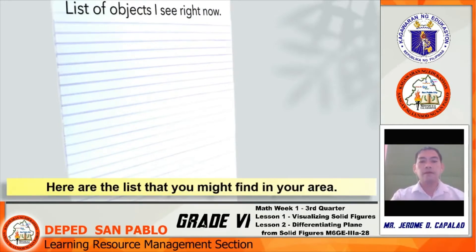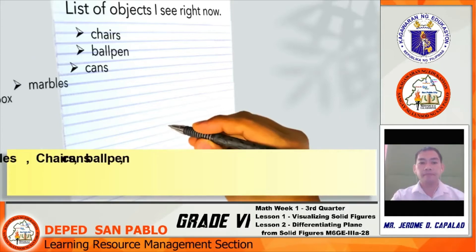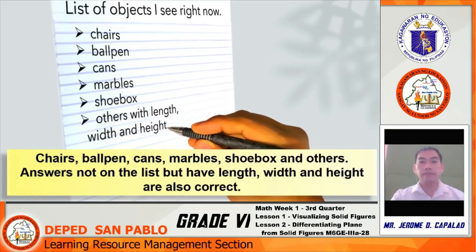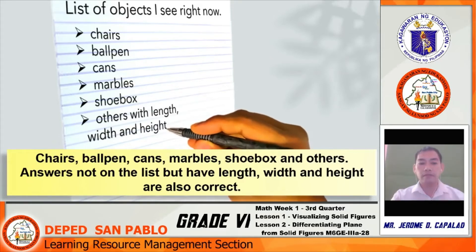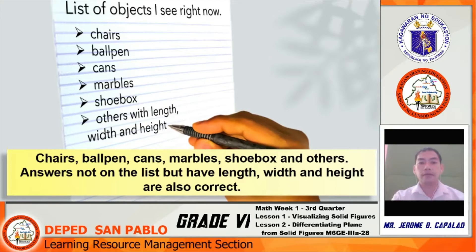Here are the lists that you might find in your area. We have chairs, ball pen, cans, marbles, shoebox, and others. Answers not on the list but have length, width, and height are also correct.